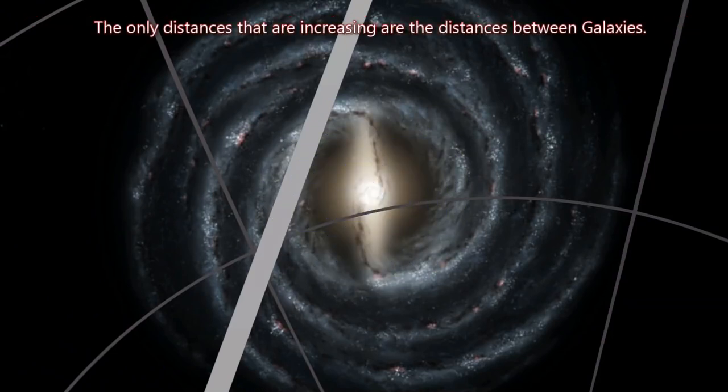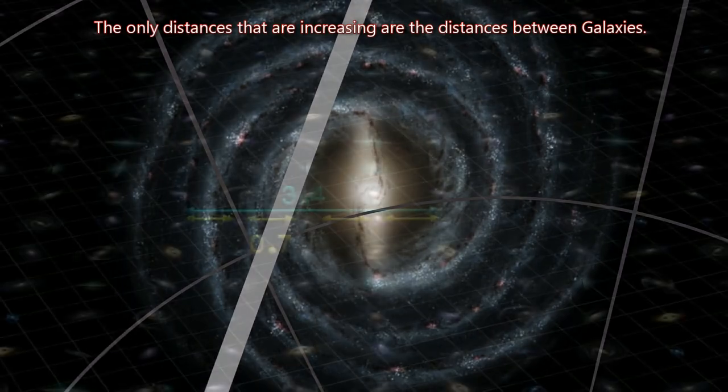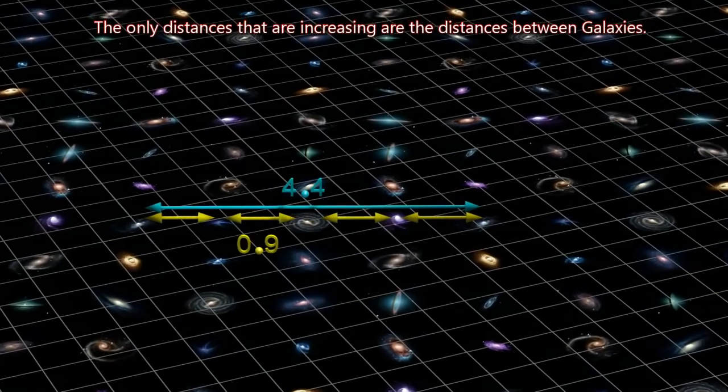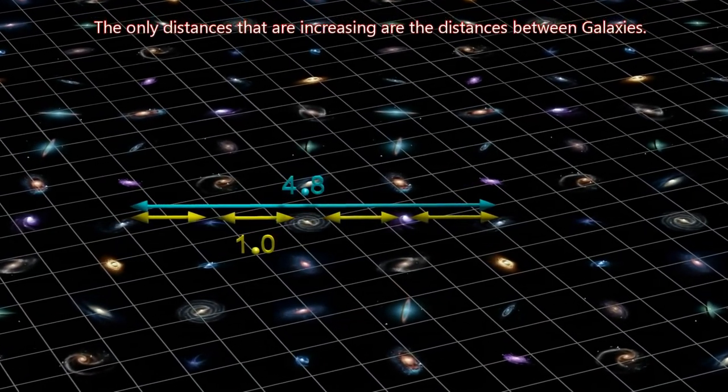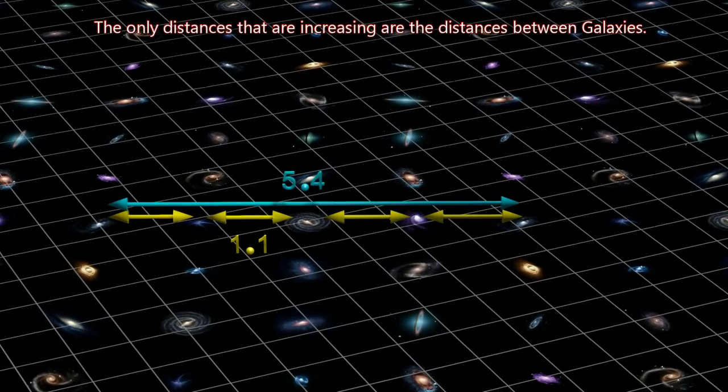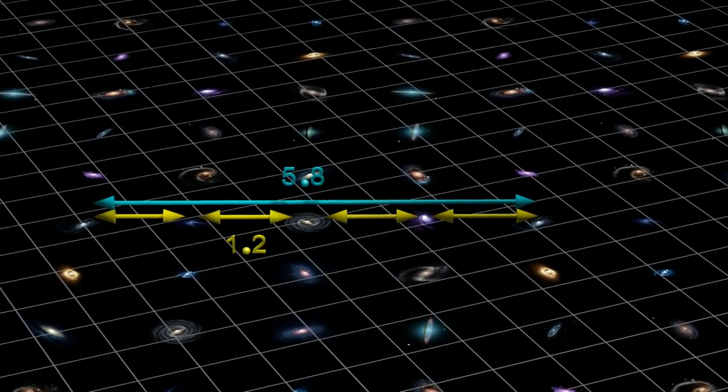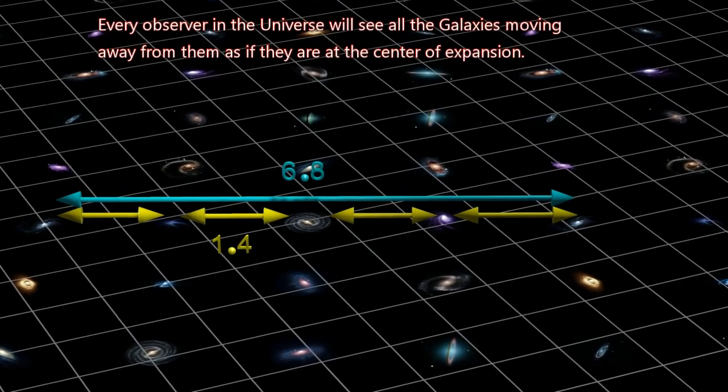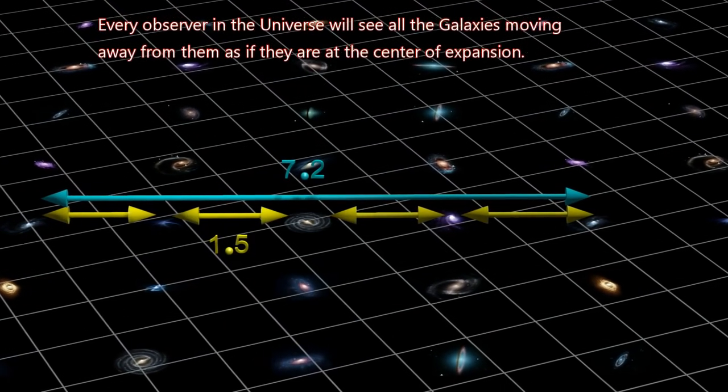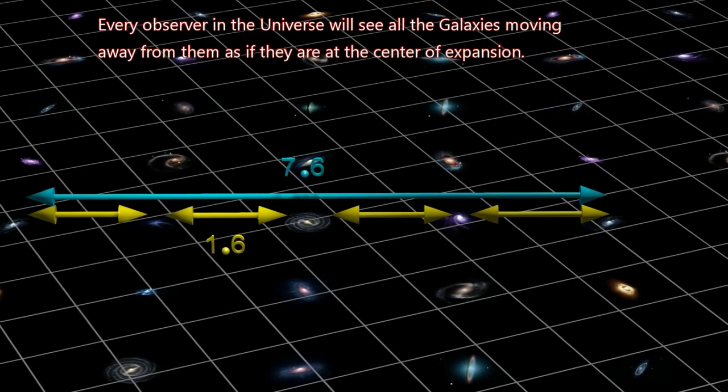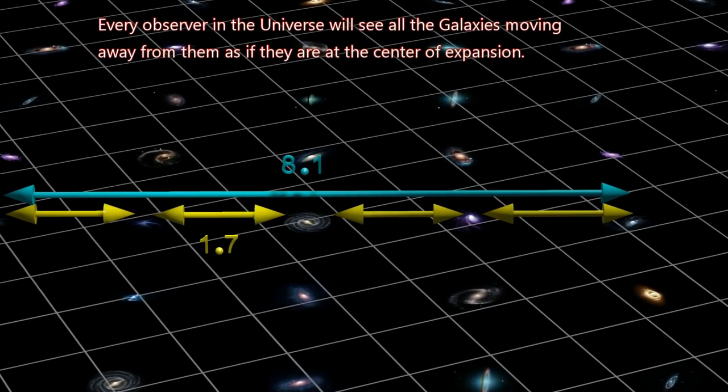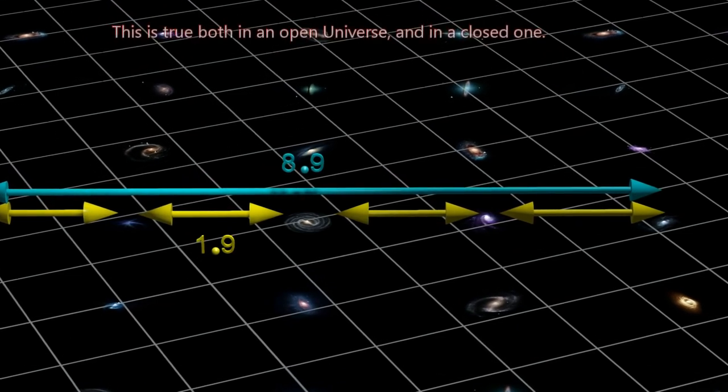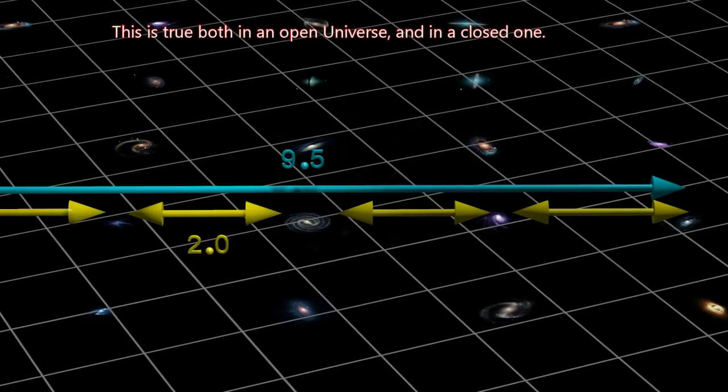The only distances that are increasing are the distances between galaxies. Every observer in the universe will see all the galaxies moving away from them as if they are at the center of expansion. This is true both in an open universe and in a closed one.